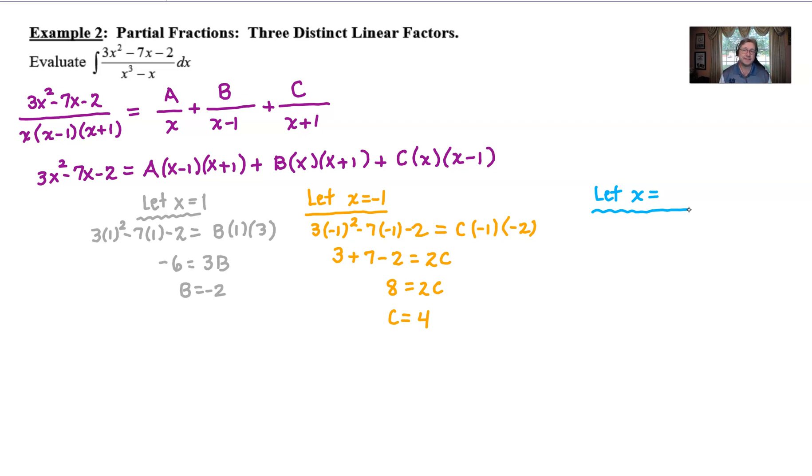But you might as well pick the easiest x value, and that would be 0. We have yet to plug in 0 because that's going to make both the B and C's disappear. So if x is going to be 0, the left side, I think we can tell, is going to be negative 2. And then the right side, well, we're going to have A times negative 1 times positive 1, which pretty much suggests that A is going to be positive 2 by the time we divide both sides by negative 1.